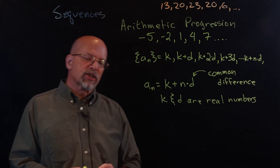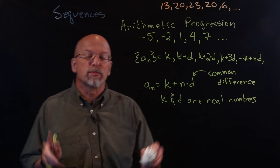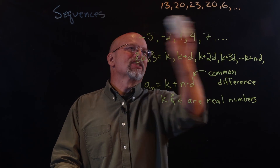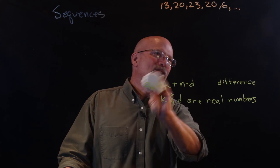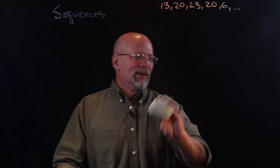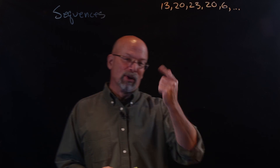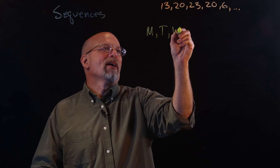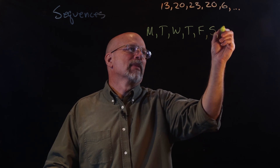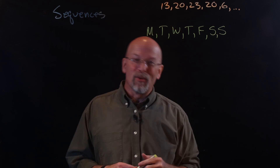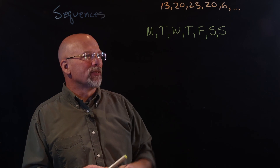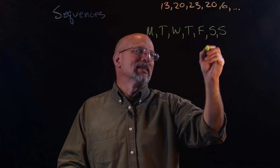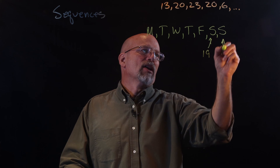So there's a quick introduction to sequences — specifically, explicit sequences. We'll talk about another type in the next lesson. By the way, what about that sequence at the top — thirteen, twenty, twenty-three, twenty-six? She got us. It turns out she had taken the first letter of each day of the week and mapped it to its position in the alphabet. After twenty-six, you get S, the nineteenth letter, followed by another nineteen.